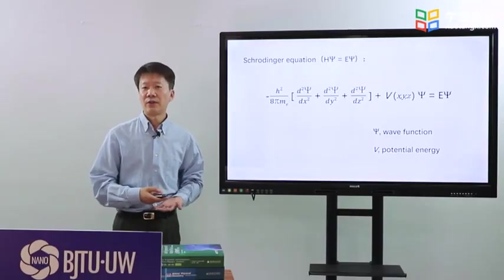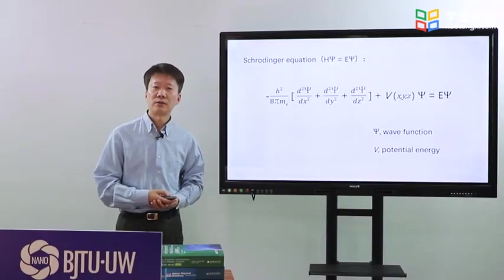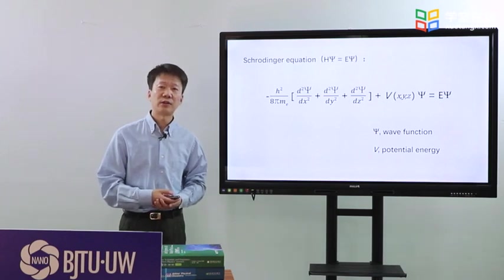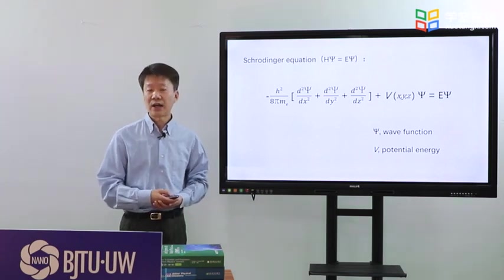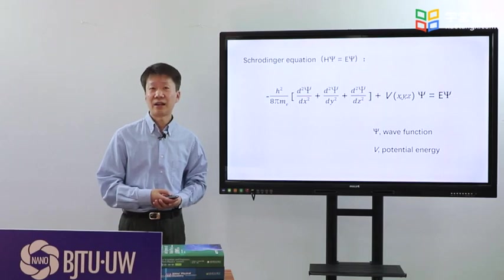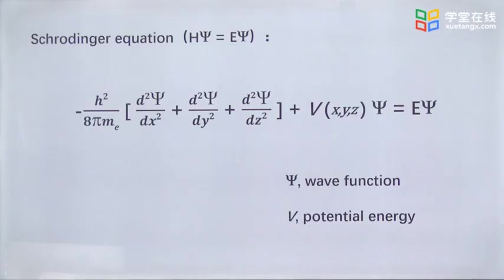Schrodinger answered this key question. He presented an equation: H sine equals E sine. H is further expressed by such a complicated term includes kinetic and potential parts.